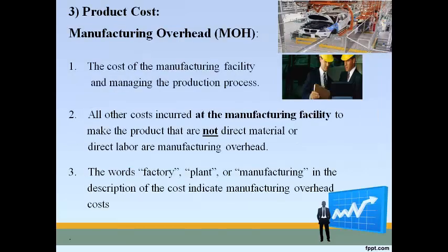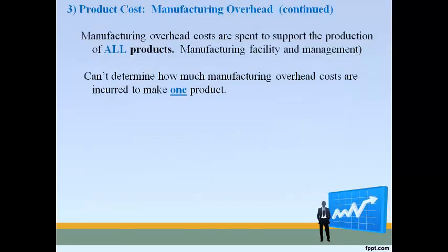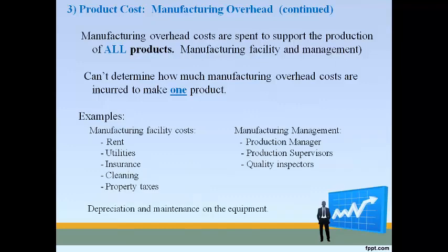Manufacturing overhead is the cost of the manufacturing facility and the cost of managing the production process. If a cost is incurred at the manufacturing plant and is not direct material or direct labor, it is part of manufacturing overhead. The words factory, plant, or manufacturing describe a cost that indicates it is part of manufacturing overhead. All costs occurring in the manufacturing area are product costs. Manufacturing overhead costs are incurred while making many products, so it is not possible to determine exactly how much cost is incurred to make just one product. These costs are usually paid weekly or monthly.